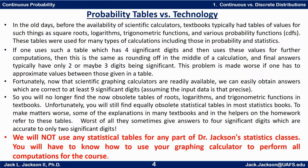I want to make a comment about probability tables versus technology. In the old days before scientific calculators, textbooks typically had tables of values for things such as square roots, cube roots, logarithms, trigonometric functions, and various probability CDFs such as normal tables or binomial tables. Now if someone uses a table with four significant digits and then uses those values for further computations, this is the same as rounding off in the middle of a calculation. Rounding to four digits typically yields final answers that are only two, sometimes three, digits that are correct. This problem is made worse if one has to approximate values between those given in a table.